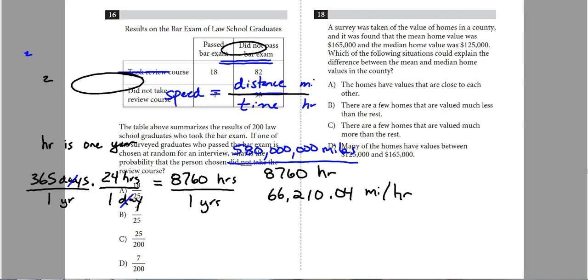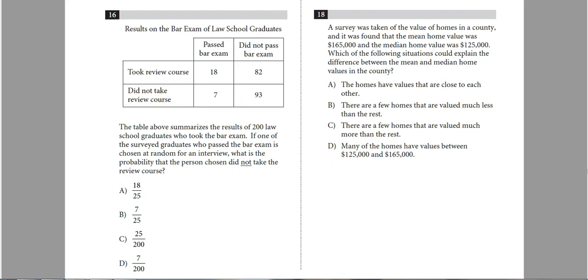Number 16, looks like we have some table data here. These typically are going to be some sort of a ratio or some sort of a probability or percentage. So we're talking about the bar exam. We have, if you look horizontally here, we have students who took the review course. So we had 18 plus 82, so it looks like we had 100 students that took the review course. I like to get the totals there on the sides. Did not take the review course, we had 7 to 93, so we had 100 kids did not take the review course. Now, when you start coming down and you look at who passed, coming vertically, it looks like 25 kids passed the bar exam, and holy smokes, a whopping 175 did not.